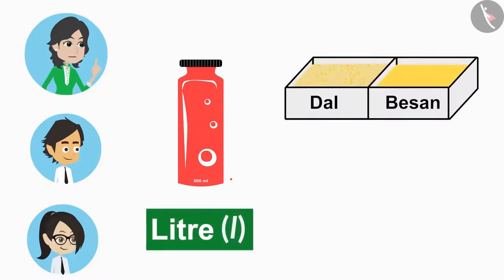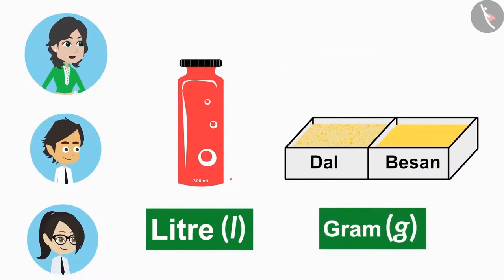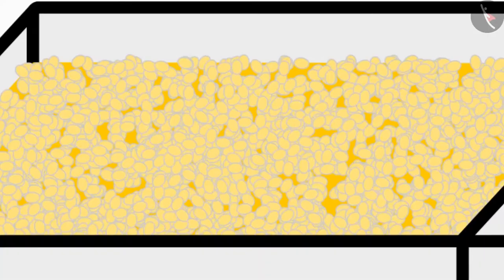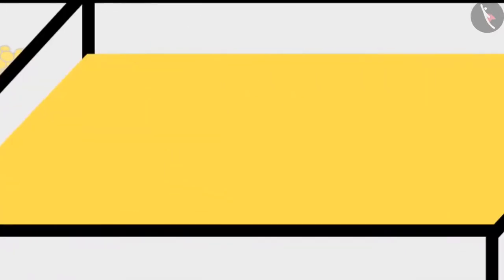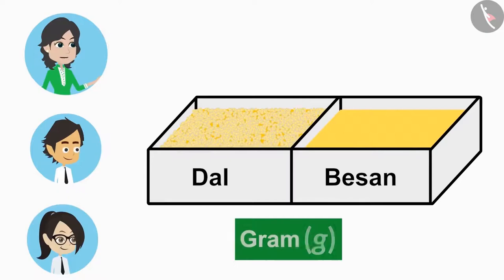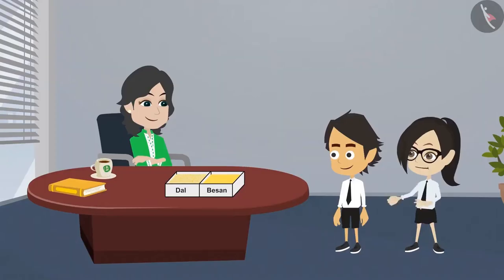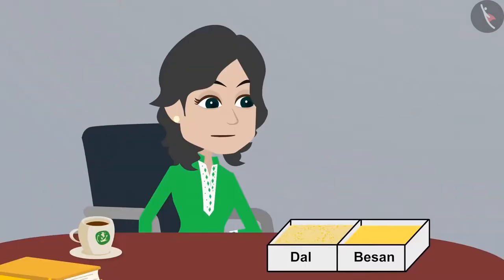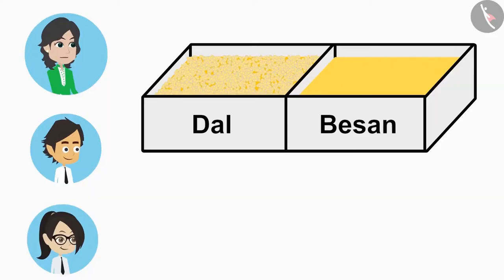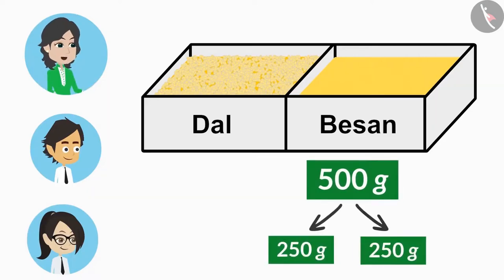Just like we use water to measure liquid, we use gram to measure solid objects. Objects like Dal which are not easy to count and objects like Besan that cannot be counted are measured in grams. This means after measuring Besan in grams, we can divide it into two halves. Yes, if you have 500 gram Besan, then you can divide it into 250 grams each.